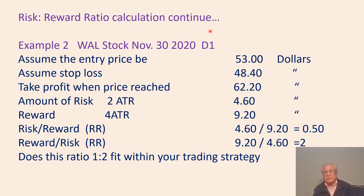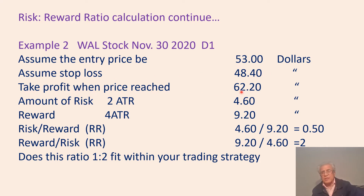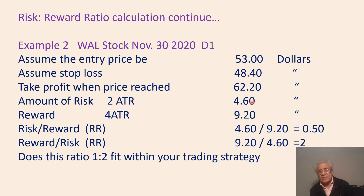Risk-reward ratio calculation, Example 2: Walmart stock, November 30, 2020, D1 time frame. Assume entry price is $53.00, stop loss at $48.40, and take profit when price reaches $62.20. The amount of risk: I chose 2 ATR; each ATR is $2.30, so 2 ATR makes $4.60. The reward is 4 ATR, which comes to $9.20. If you deduct $4.60 from $53.00, you get the stop loss of $48.40.